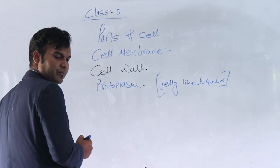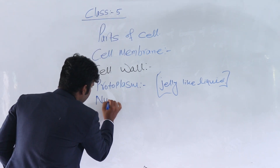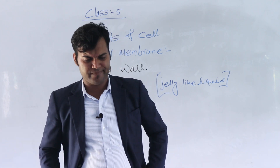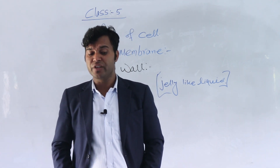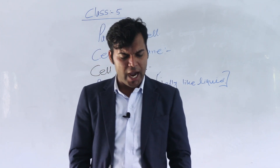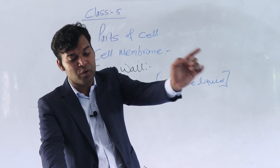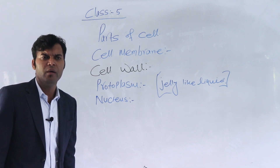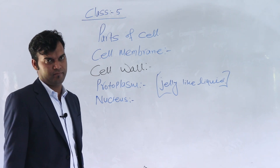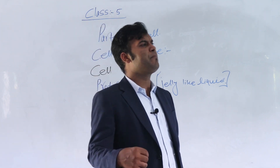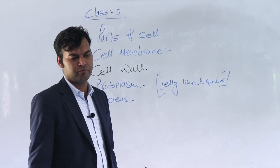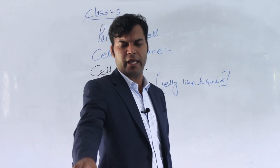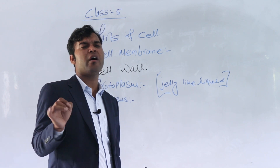Next one is the nucleus. What is the nucleus? This is the most important part of a cell. A cell cannot function without a nucleus. It has a spherical or oval shape. It is found at the center in the animal cell and near the cell wall in the plant cell.